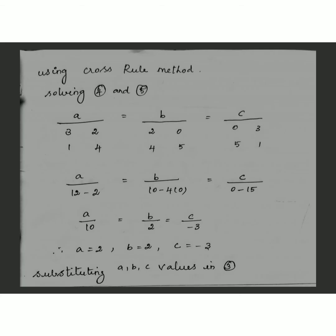When you simplify, you get the values for a, b, and c. For this simplification, we use the cross rule method. Take the coefficients of a, b, c in equations 4 and 5. For finding the value of a, leave the coefficient of a, and find the determinant of the coefficients of b and c — you get 12 − 2. Similarly, find b and c. So, a = 2, b = 2, and c = −3.